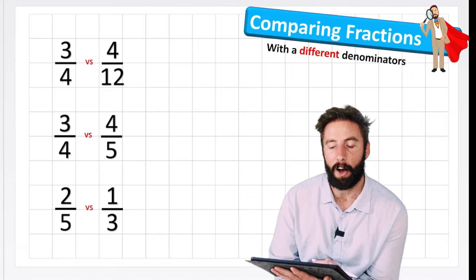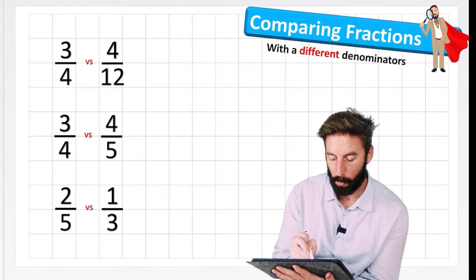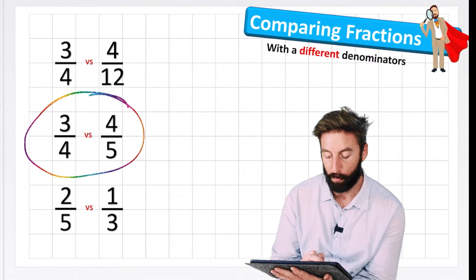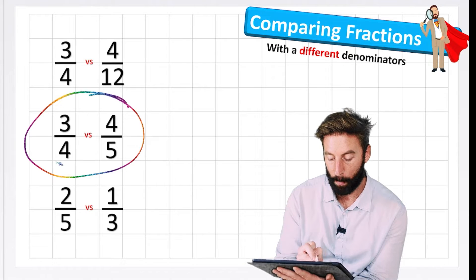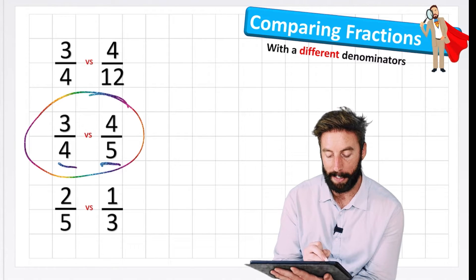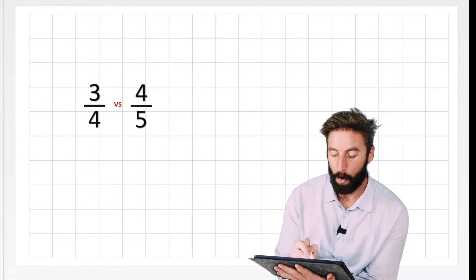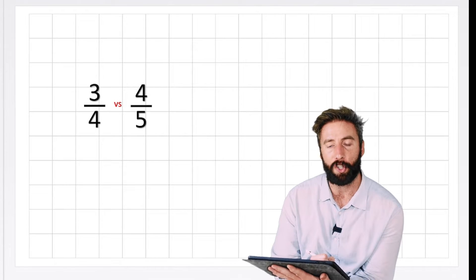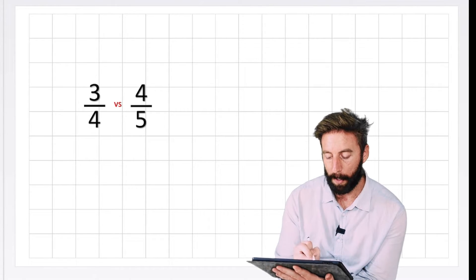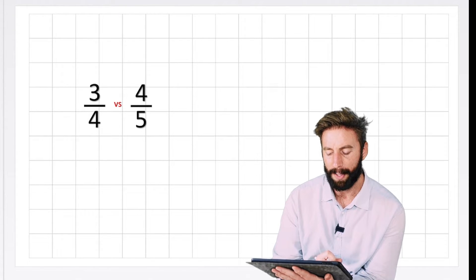So let's keep using these symbols as we answer the next two questions. And let's start question 2. We're going to have a look at this question here: 3 quarters or 4 fifths. Again, our denominators are different. So we're going to need to do some magic. So what can I see here? Is there a relationship? Well, not an obvious one, because 5 is not in the 4 times table, or 4 is not in the 5 times table. So there's not an obvious one.